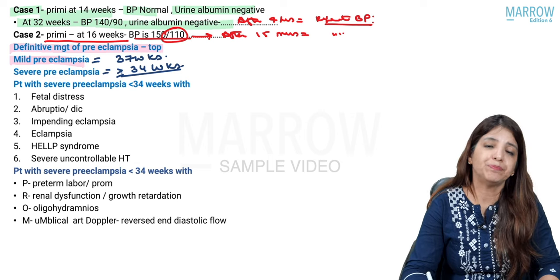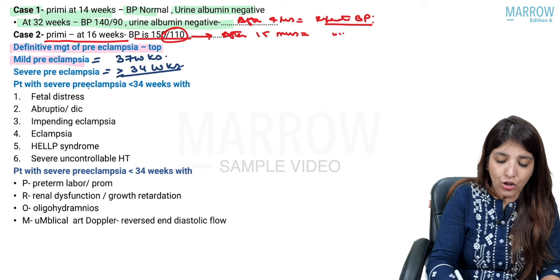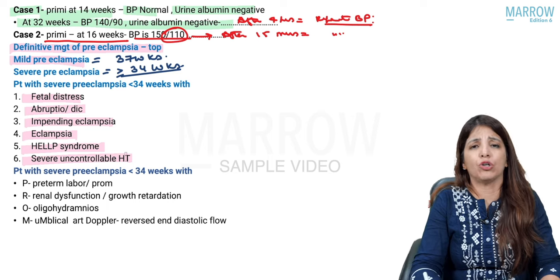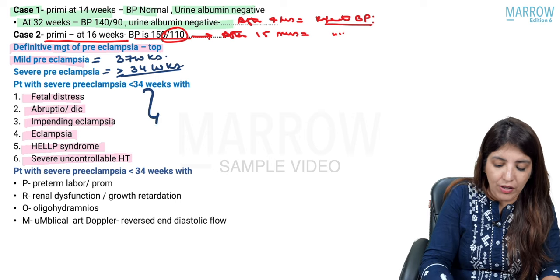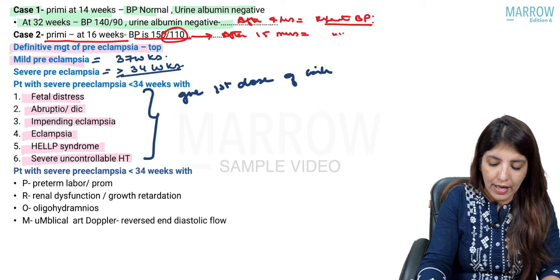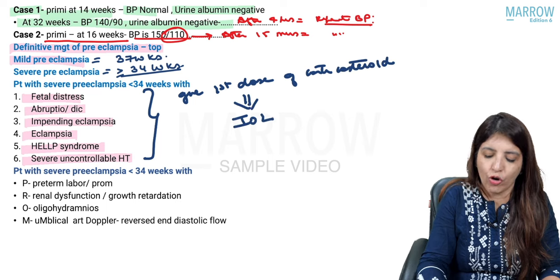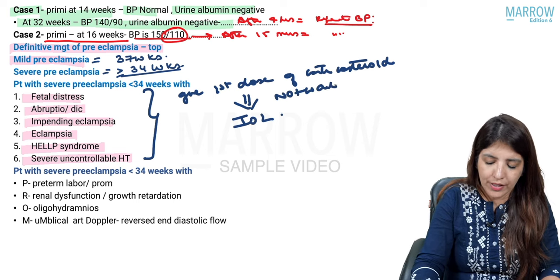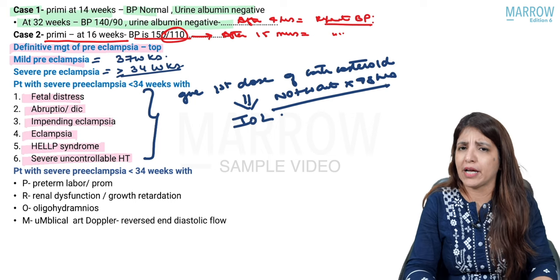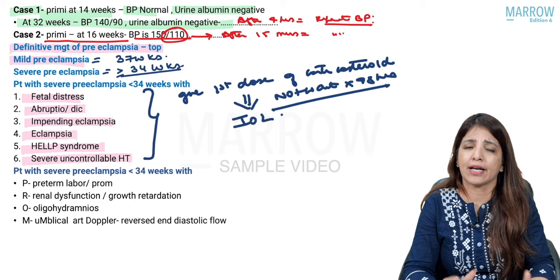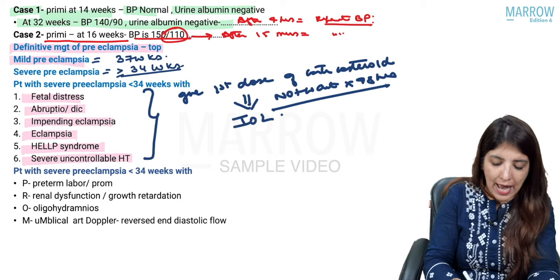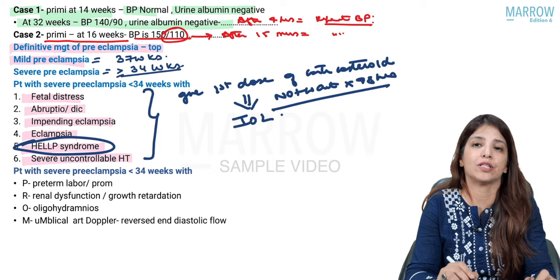In severe preeclampsia, if the patient is less than 34 weeks and has fetal distress, abruptio, DIC, impending eclampsia, eclampsia, HELLP syndrome, or severe uncontrollable hypertension — these are emergency conditions — give the first dose of corticosteroid and immediately go for induction of labour without waiting 48 hours. HELLP syndrome has been newly included in this list in Williams new edition.